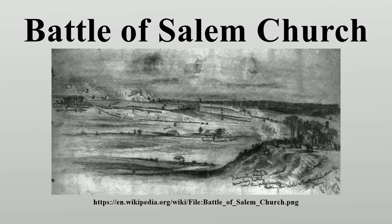After receiving word of Sedgwick's breakthrough at Fredericksburg, Confederate Gen. Robert E. Lee detached the division of Lafayette McLaws from the Chancellorsville lines and marched them to Salem Church. McLaws's division arrived at Wilcox's position around Salem Church shortly after noon, reinforced by William Mahone's Brigade of Richard H. Anderson's Division.